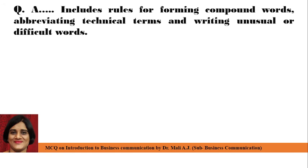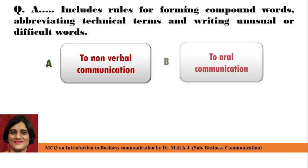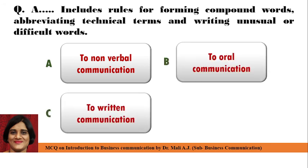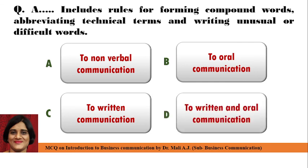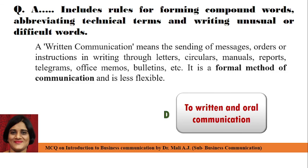Next question: A Dash includes rules for forming compound words, abbreviating technical terms, and writing unusual or difficult words. Point A: To Non-Verbal Communication, Point B: To Oral Communication, Point C: To Written Communication, and Point D: To Written and Oral Communication. Correct answer is Point D: To Written and Oral Communication. Because written communication means the sending of messages, orders, or instructions in writing through letters, circulars, manuals, reports, telegrams, office memos, and bulletin. It is a formal method of communication and is less flexible.